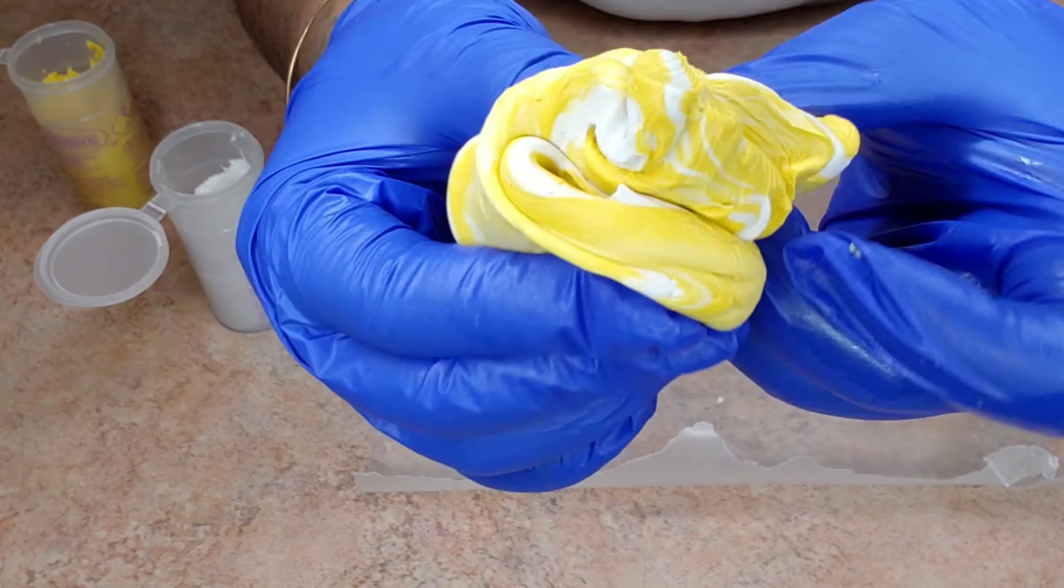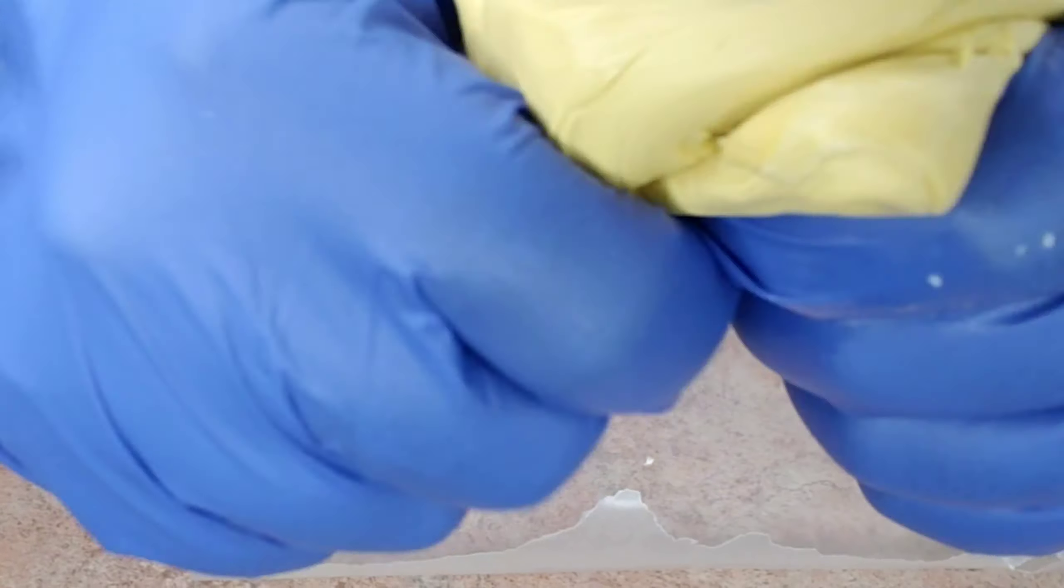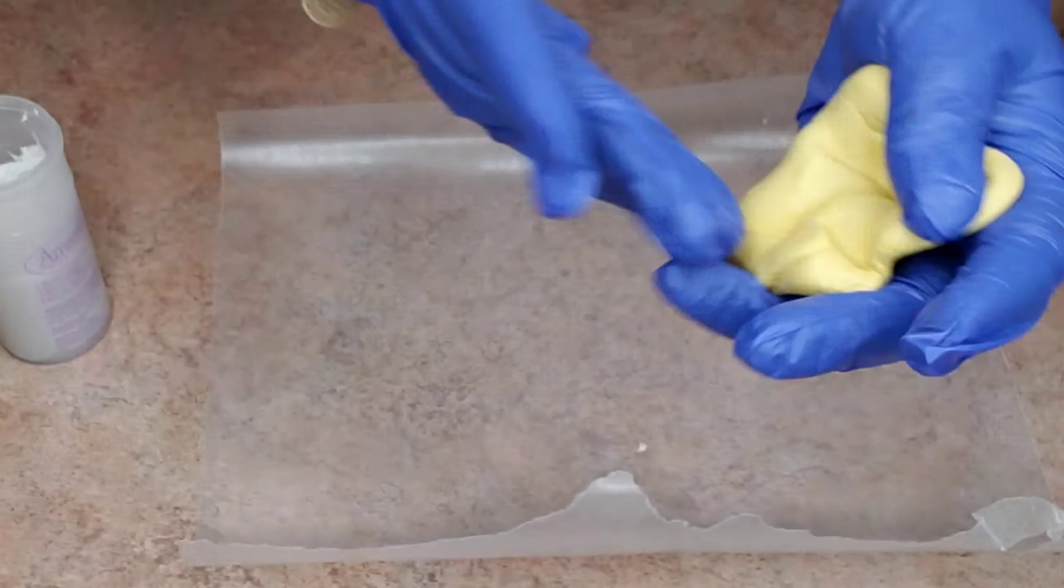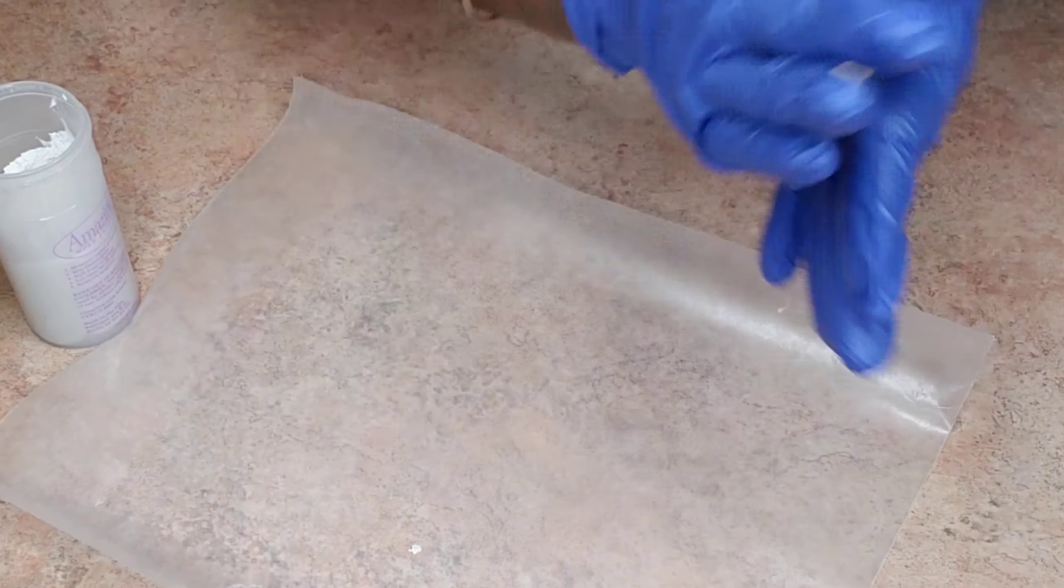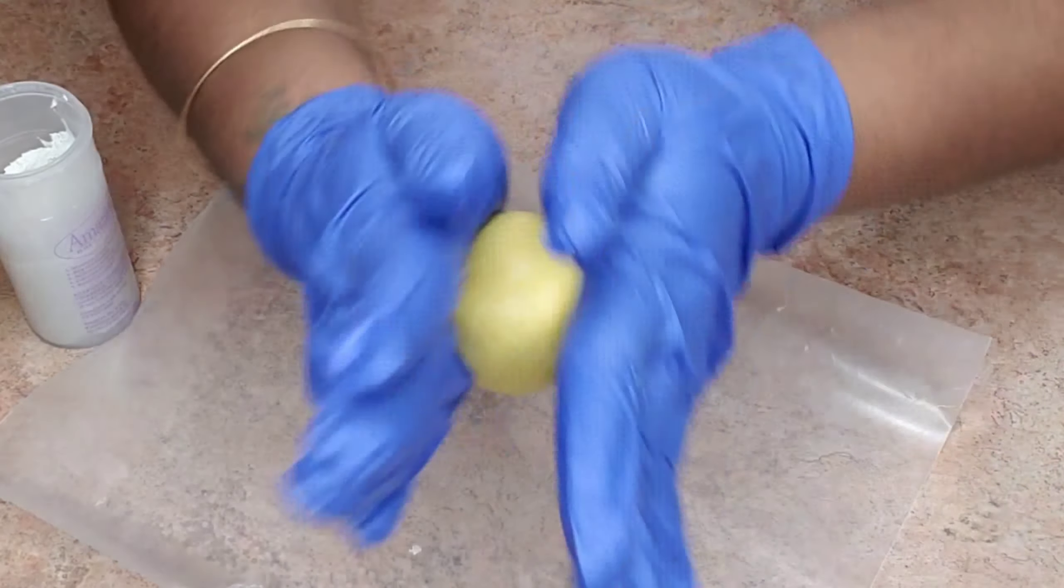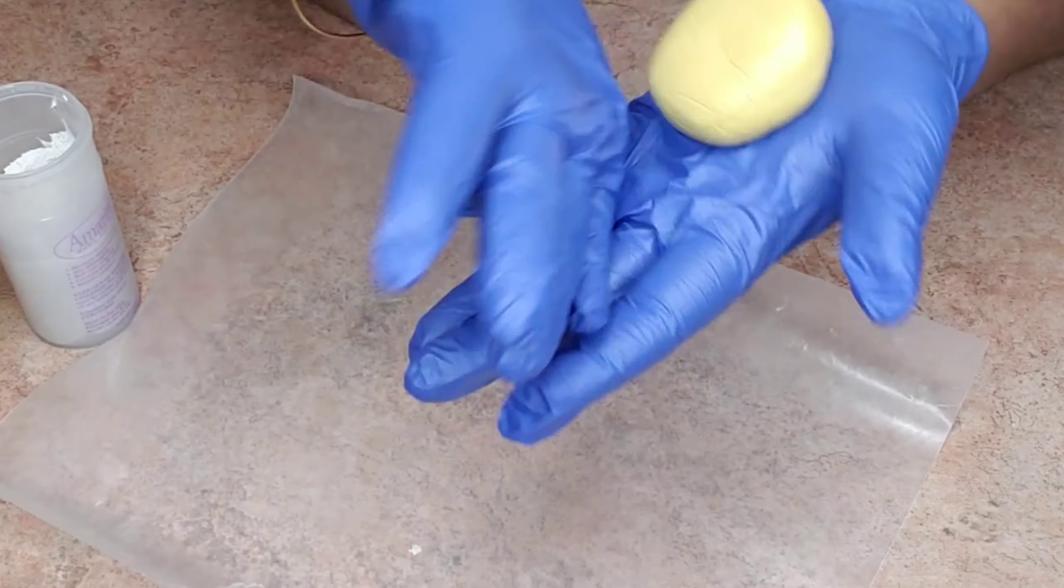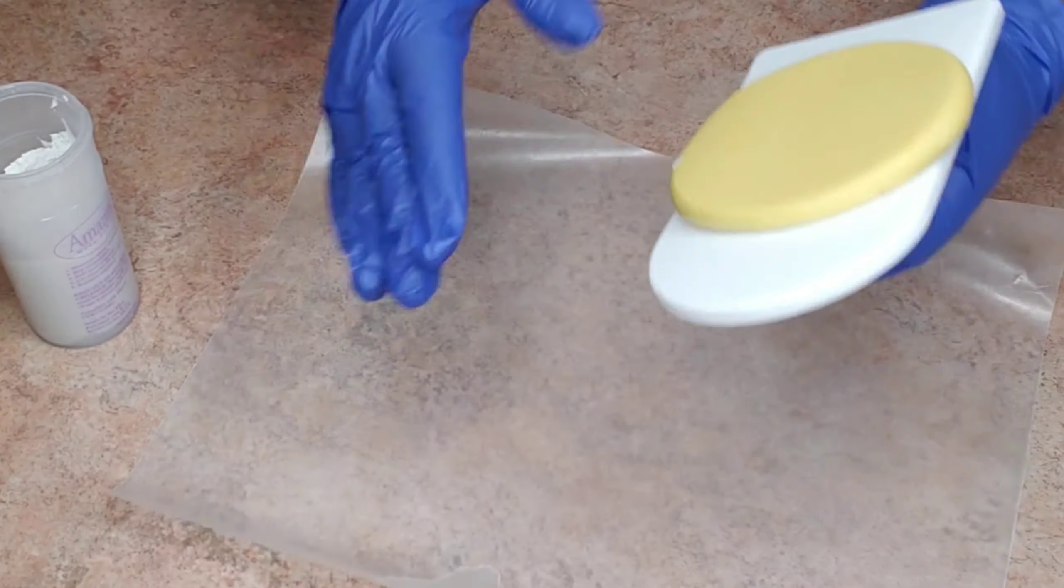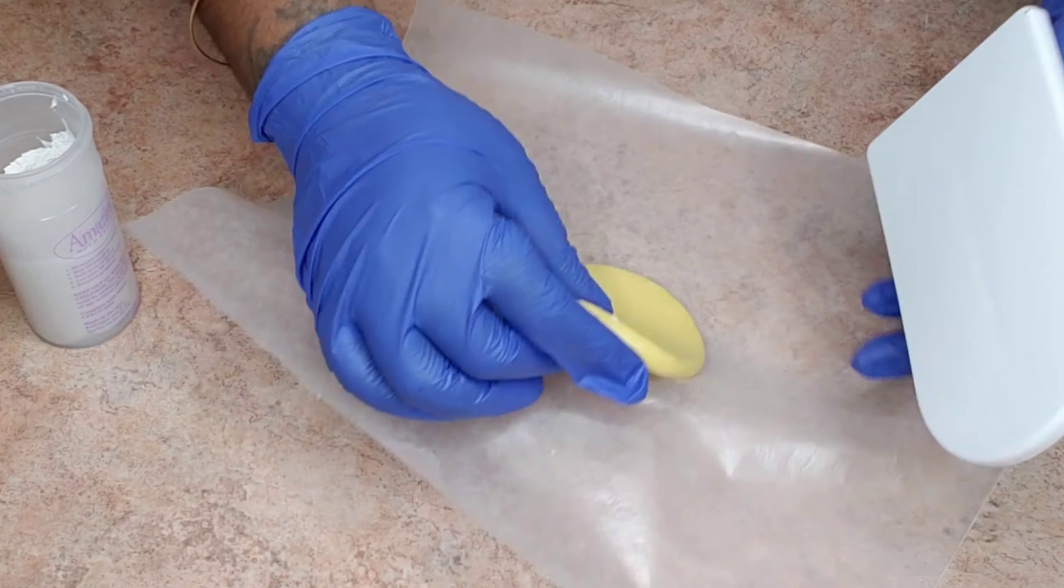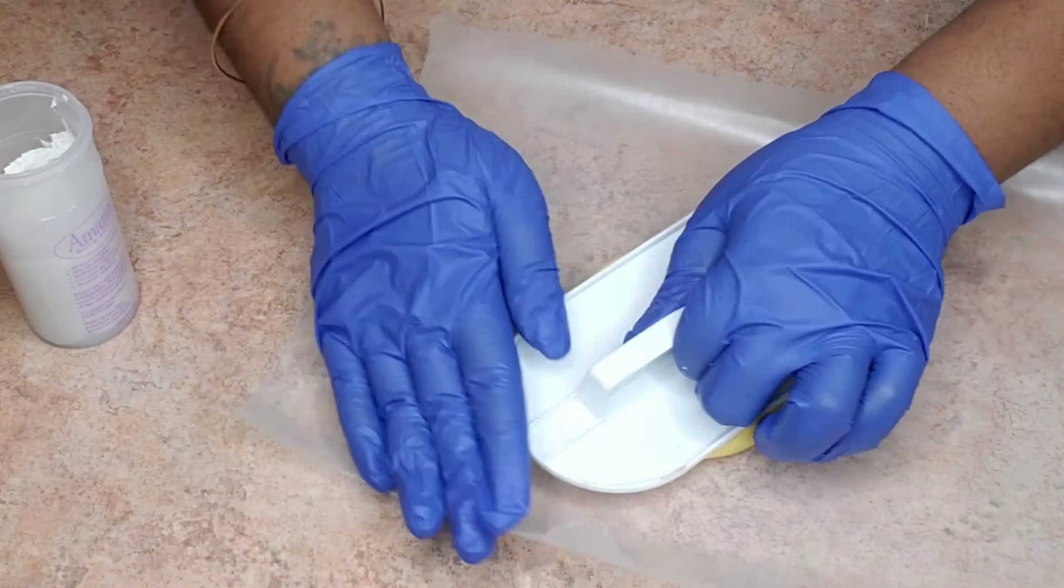Now that everything is mixed together into one color, I'm rolling it into a ball and flattening it with the fondant shaper. I'm trying to get it as flat as I can because you want maximum definition while keeping your silicone mold flexible.